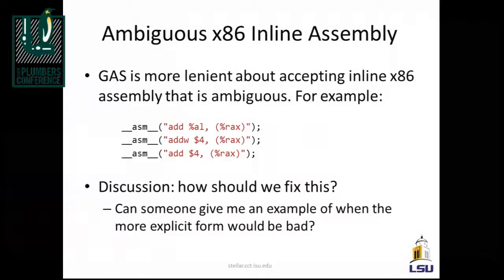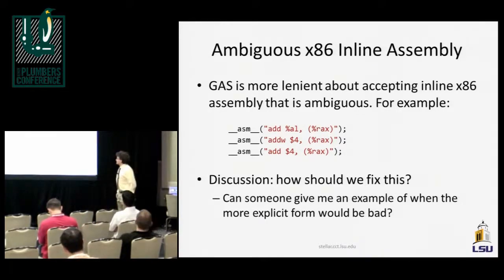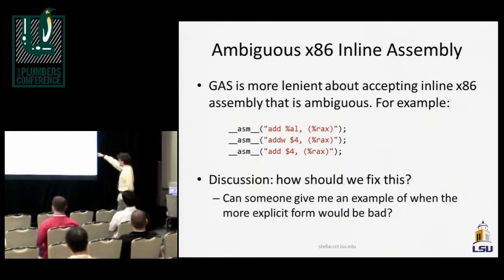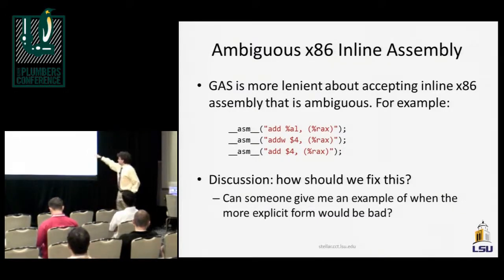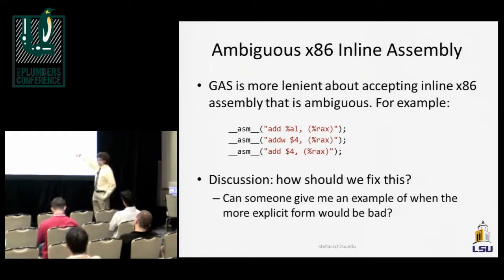So this is the ambiguous inline assembly slide. We've got three examples. The first one — adding from the AL register into RAX — Clang and GCC will both accept that because it's clear what instruction is meant. For the next one, Clang and GCC also accept it because you have an explicit size prefix, so it knows you want a 32-bit operation. For the last instruction, Clang rejects it because it's ambiguous — it's not sure what size the operand will be.